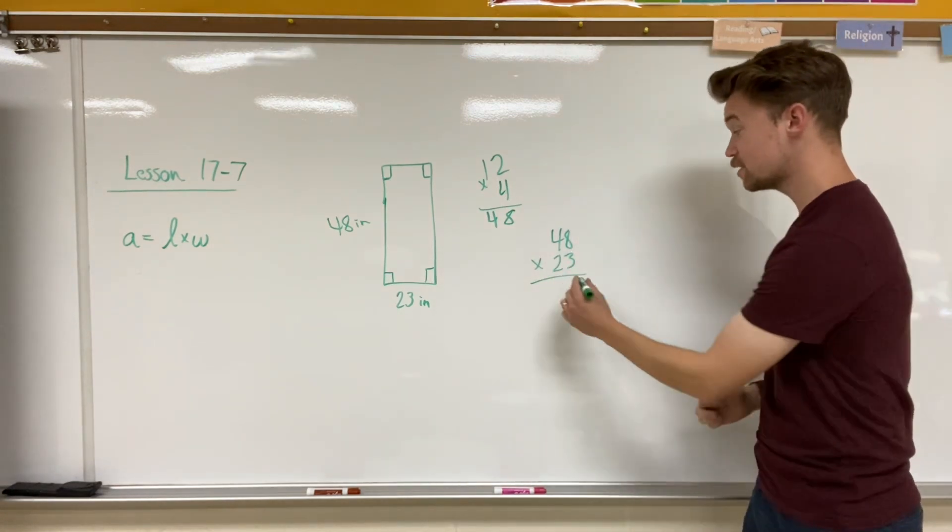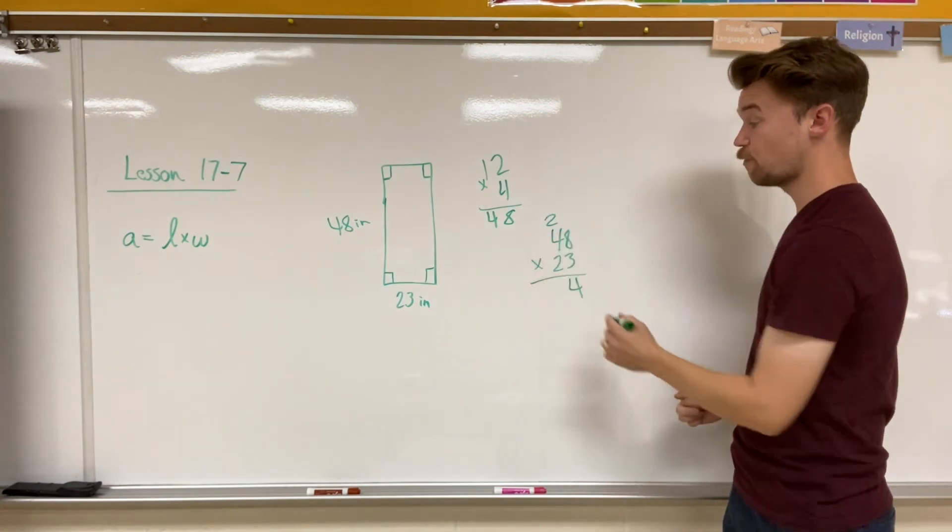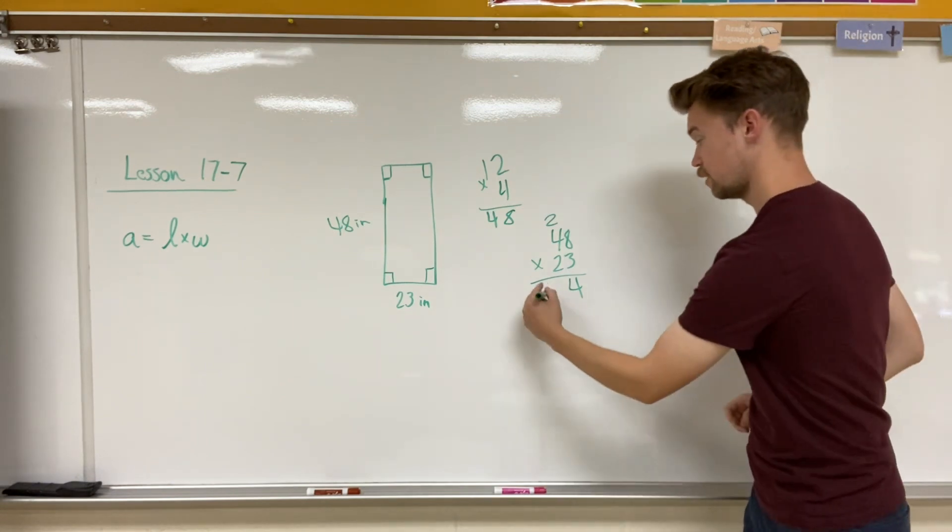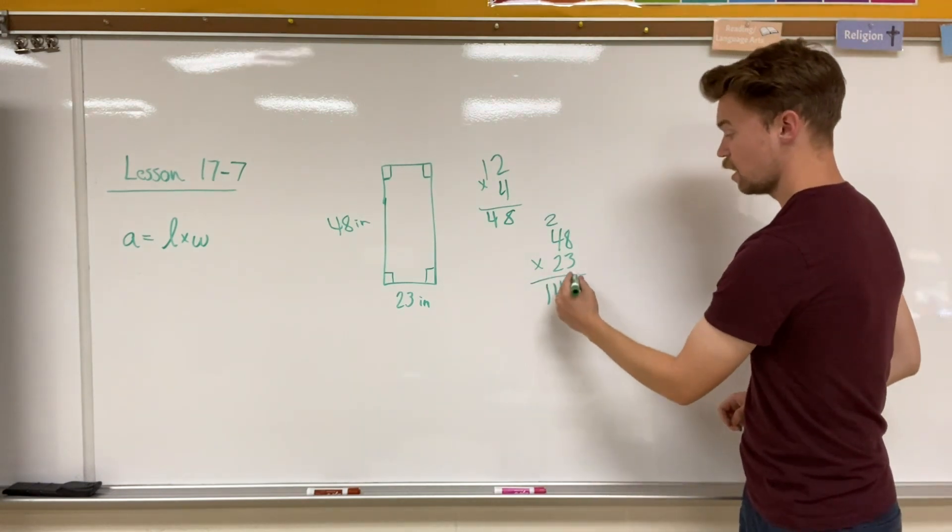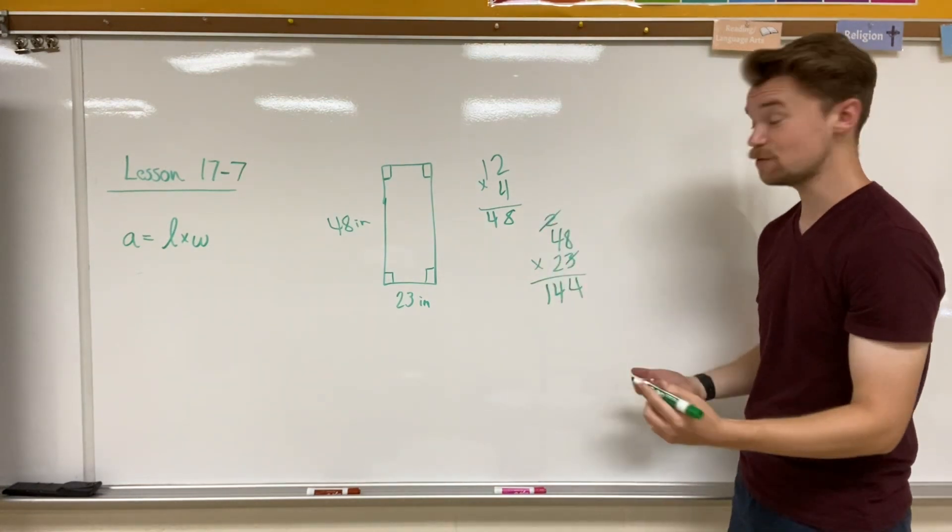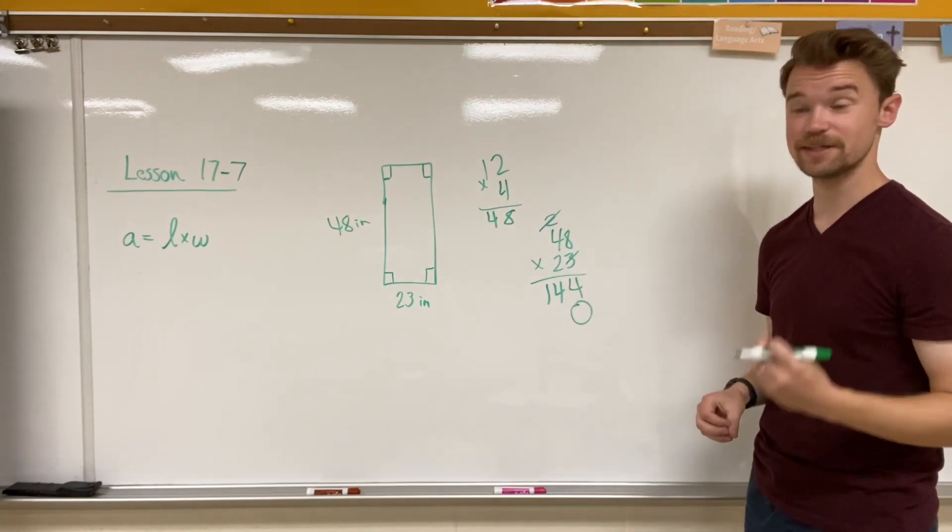So three times eight is 24. Carry my two up here. Three times four is 12 plus two is 14. I'm going to cross out this three because there is nothing left to give. I also have to cross out that two that I carried and add a zero to show that this has nothing left to give.